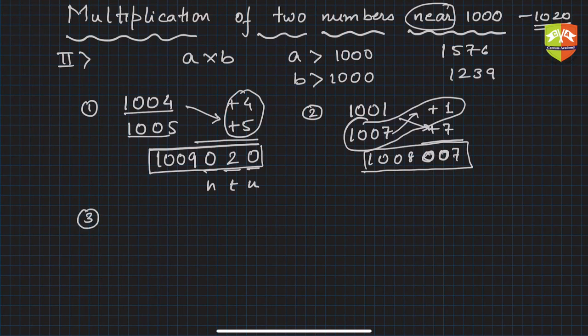Third one. Let's take another example. So as many questions you will tackle, you will become more and more fluent. 1009 and 1016. Now these are little bigger numbers as compared to the previous ones.